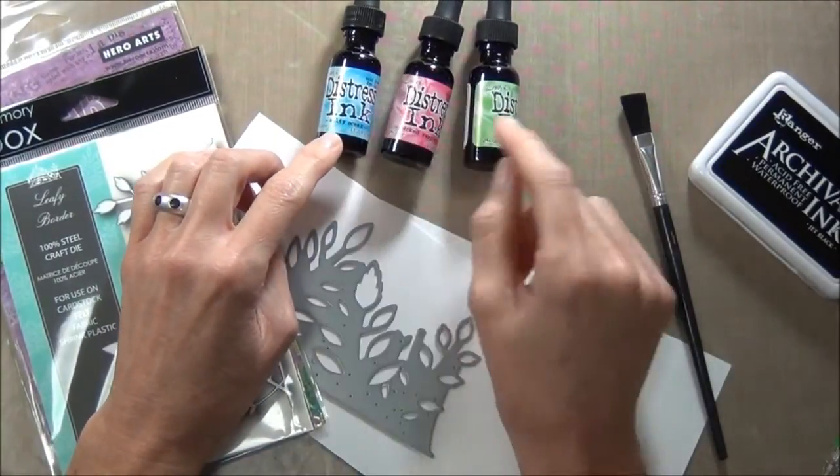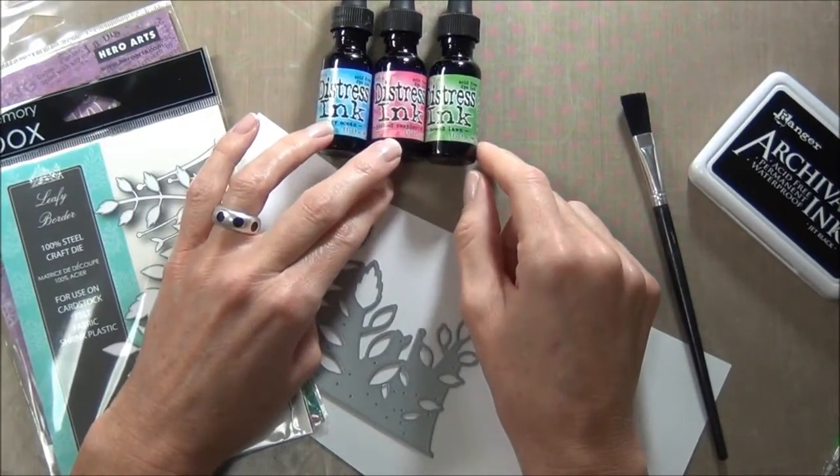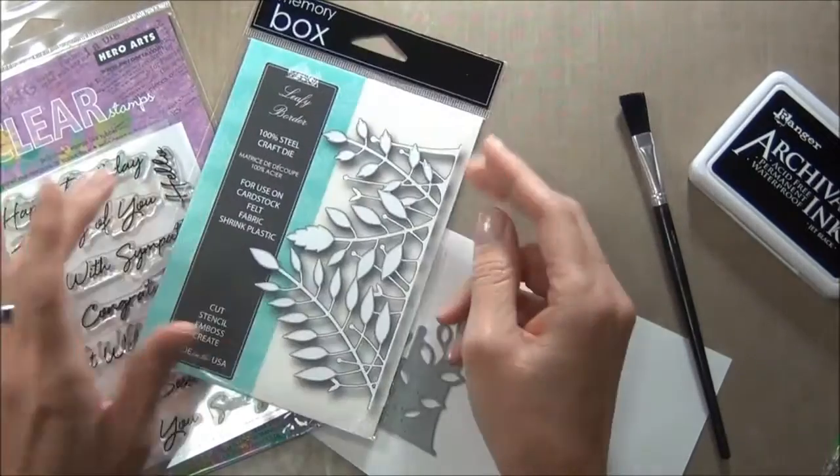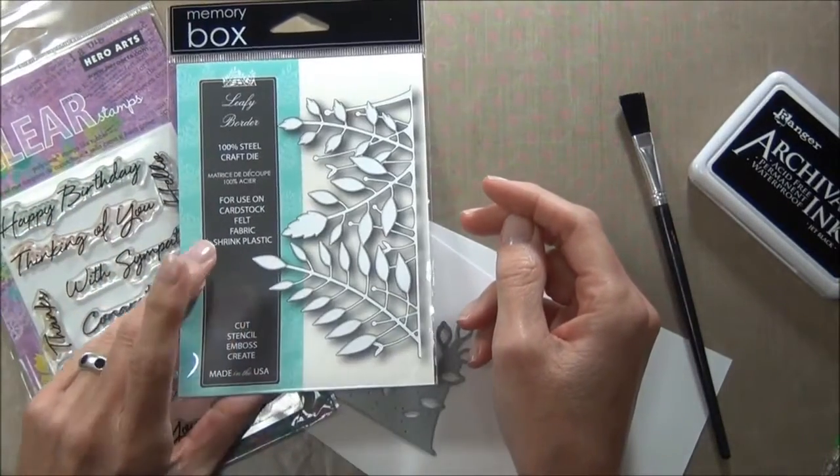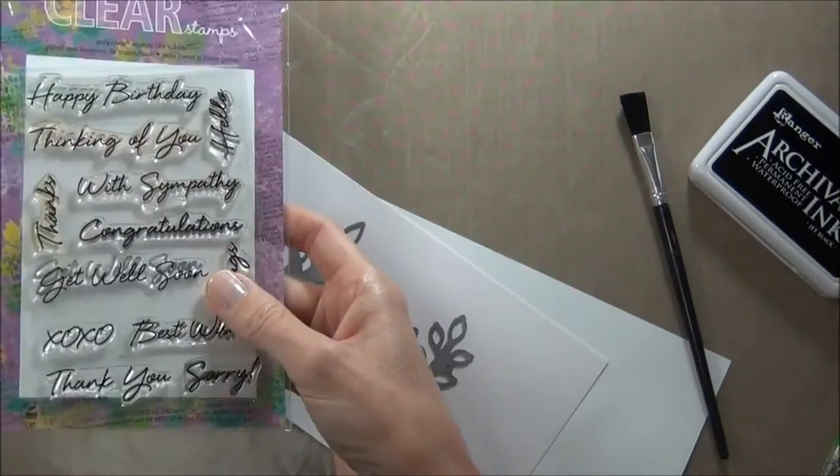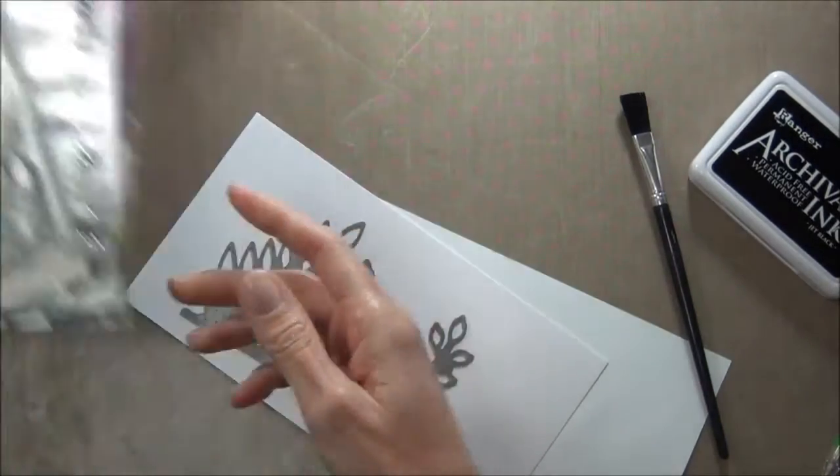Nice bright colors: Salty Ocean, Picked Raspberry, and Mowed Lawn. I've also got this Memory Box die called Leafy Border, which is a really sweet die, and a set of stamps from Hero Arts called Say It All.